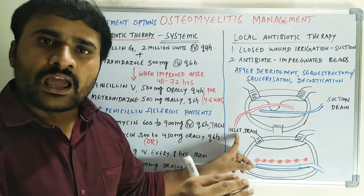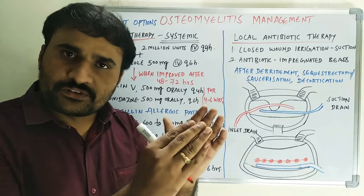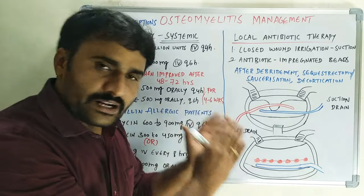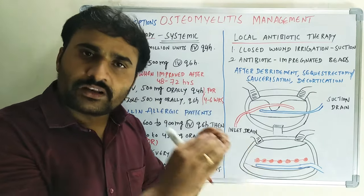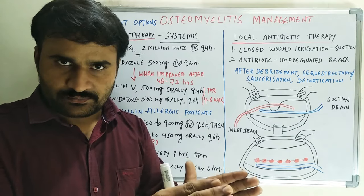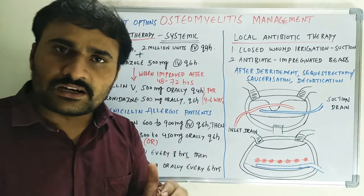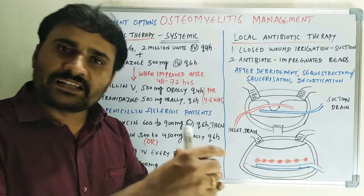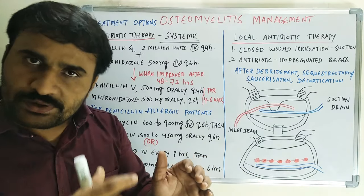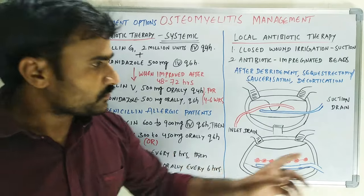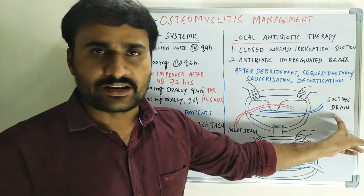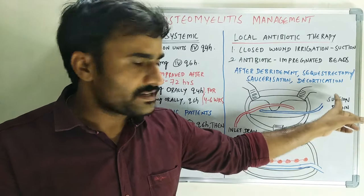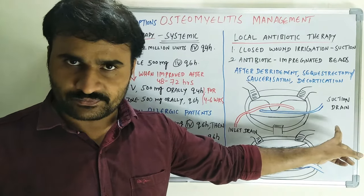We do the irrigation and leave that solution in place for 3 hours. After that, we apply intermittent suction pressure through the second drain, which is the suction drain.